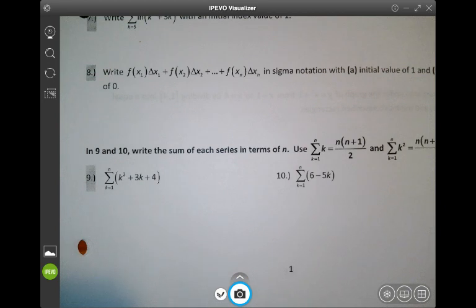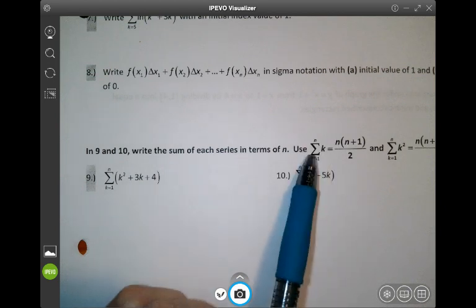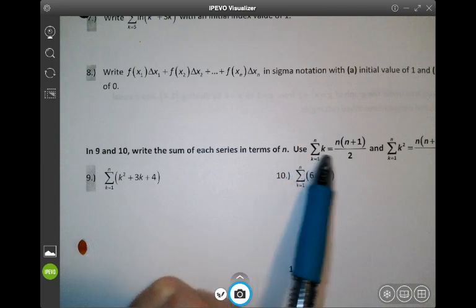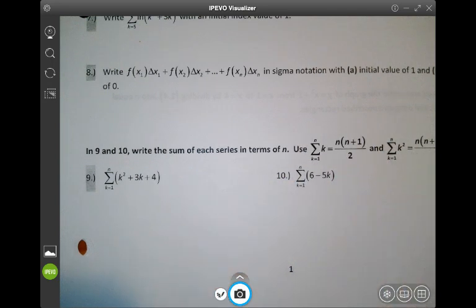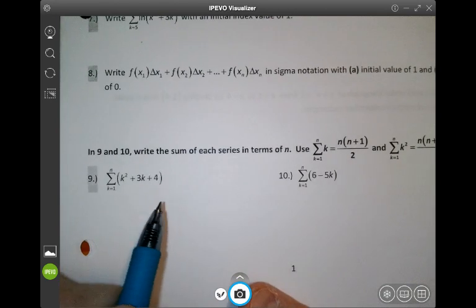So it says write the sum of each series in terms of n and use the fact that the sum from k equals 1 to n of k is this and the sum from k equals 1 to n of k squared is this. And so here I have the sum of three separate things.